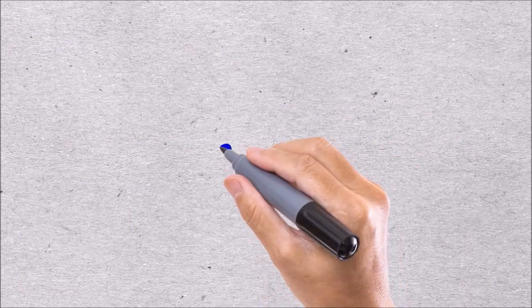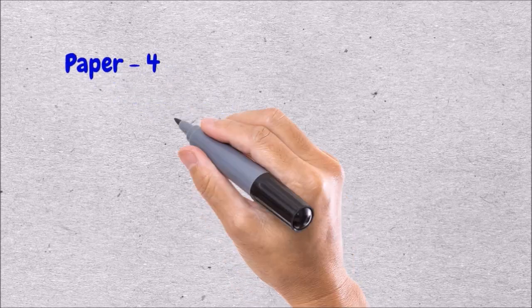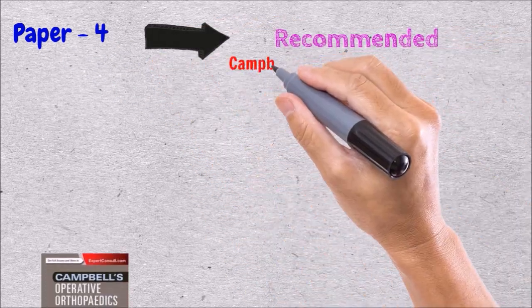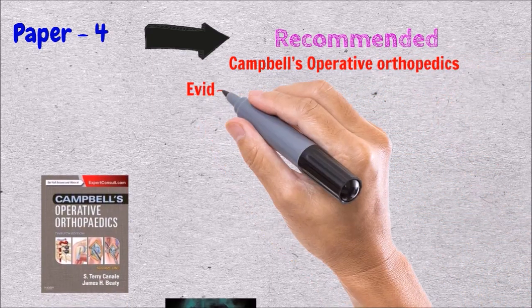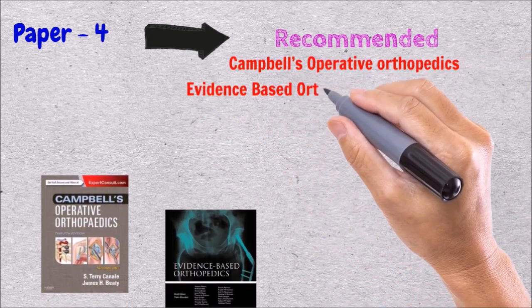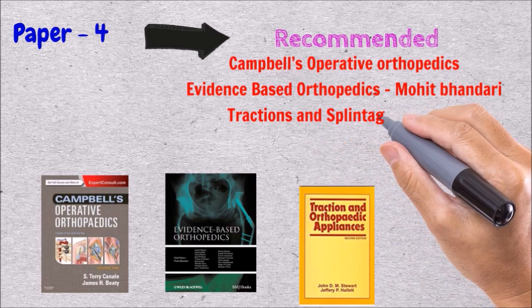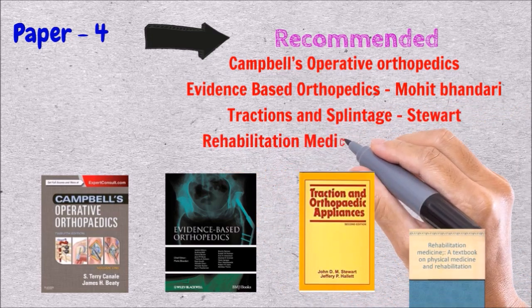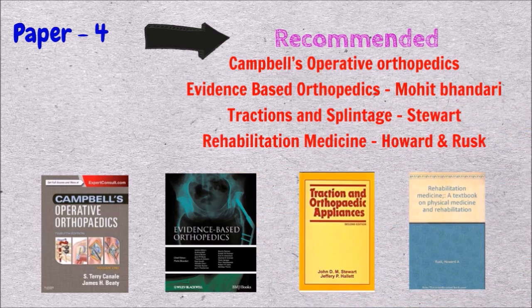For Paper 4, where recent advances, health policies, and research methodologies are considered, the recommended books are Campbell's Operative Orthopaedics, Mohit Bhandari's Evidence-Based Medicine, Stewart's Traction and Splintage, and Howard and Rusk's Rehabilitative Medicine.